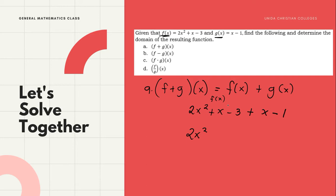Next, we have plus x. The degree of x is 1. We also have another x from g(x), so x plus x — those are similar terms. Combining them gives 2x. Note: x plus x is 2x, not x squared — x times x would be x squared.